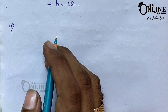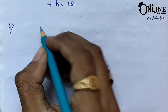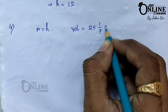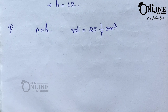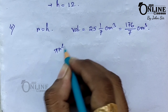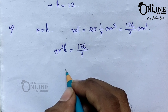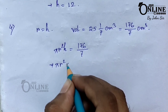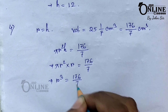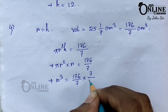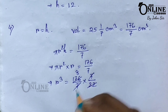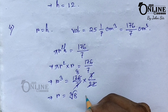Sum number four: the volume of a right circular cylinder with height equal to the radius. So r equals h, and volume equals 25 and 1/7 centimeter cube, which is 176/7. Using pi r squared h with h replaced by r: pi r cubed equals 176/7. So r cubed equals 176/7 × 7/22, giving r cubed equals 8, therefore r equals cube root of 8 equals 2. The radius is 2 centimeters.